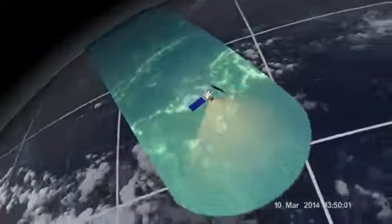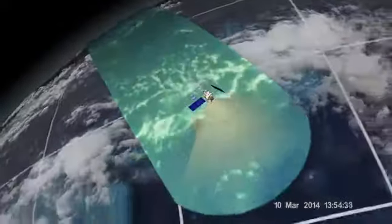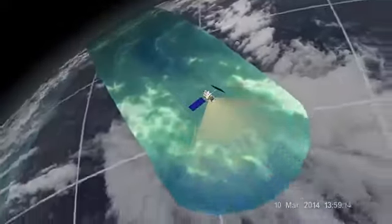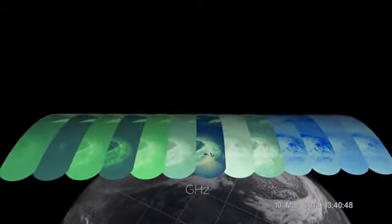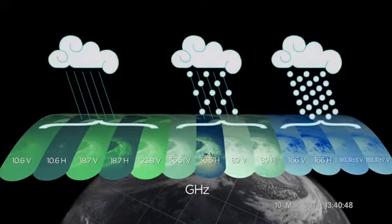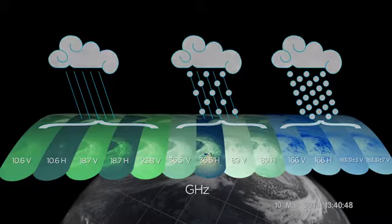The GMI produces a critical reference standard which unifies all the member satellites of the GPM constellation. The instrument has 13 channels, four more than onboard TRIM, and this greater sensitivity allows GPM to measure a greater variety of precipitation type and intensity.